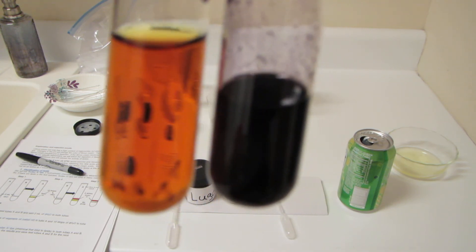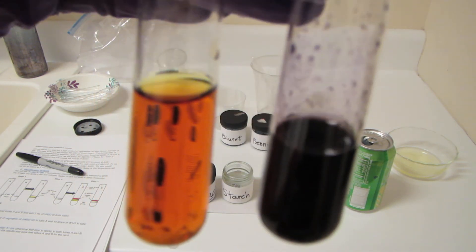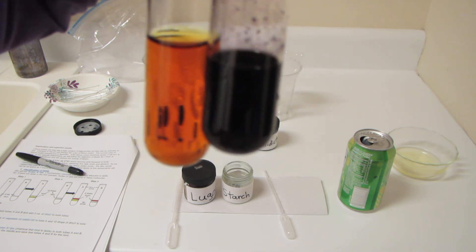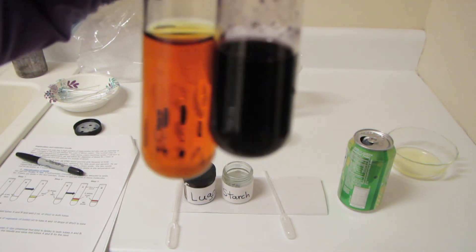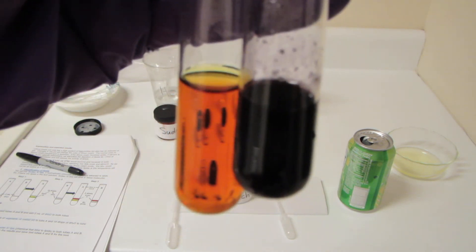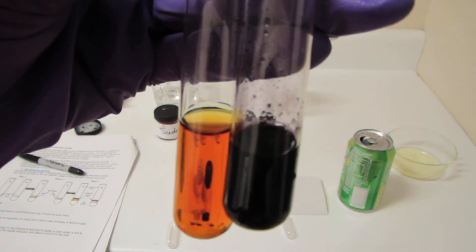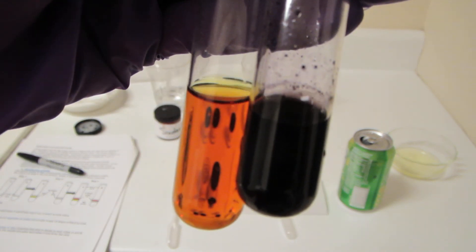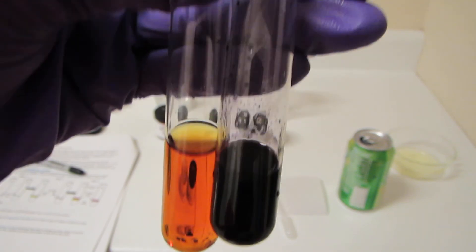This shows that when you mix Lugols solution with starch, you get this dark, almost black color. Lugols solution is very effective for looking for starch. If you need to figure out whether a food or solution contains starch, just mix a little Lugols with it, look for this dark reaction, and voila, you have your answer.